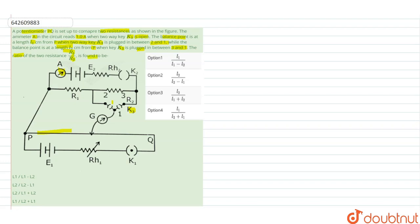In this question, we can see that when we are connecting this point then there is the length L1 obtained for the balance point, and when this key is connected, when this red key is connected, only red key 1 to 3, then L2 is the point found for the balance condition.